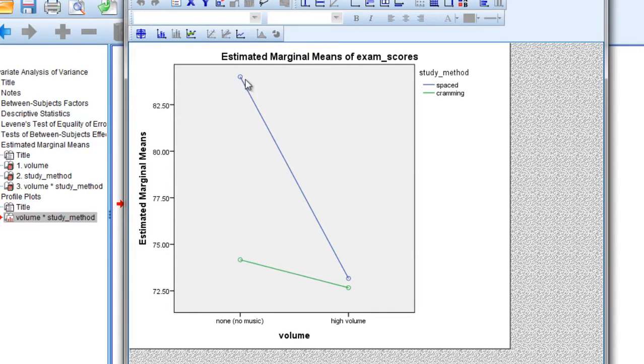So they're non-parallel lines. Now one way I could look at this is, think about what would make these lines parallel. If I took this point right here and could move it down to here, you should notice that these lines would be parallel. Right? They would be parallel lines, and that means, once again, that we have no interaction. Parallel lines indicates no interaction, and non-parallel lines indicates an interaction.